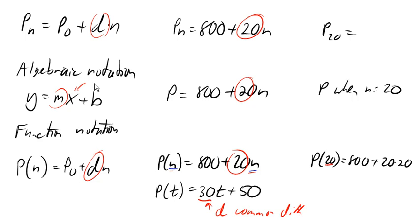Likewise, this value 50 is the constant value, the value that's not multiplying the variable. And so this is our initial amount. This is the value that would correspond back to P sub 0 in our subscript-based notation.